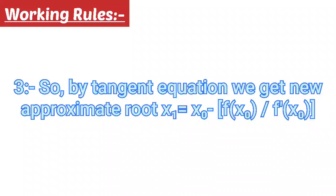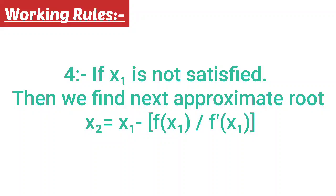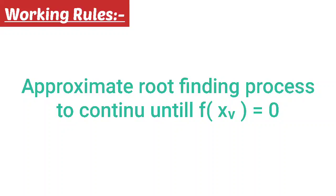Fourth step — if x is not satisfied, then we find the next approximate root: x = x - f(x)/f'(x). The approximate root finding process continues until f(x) = 0. Note: always try to find x₀ nearest to the root — this helps you find the root in fewer steps.